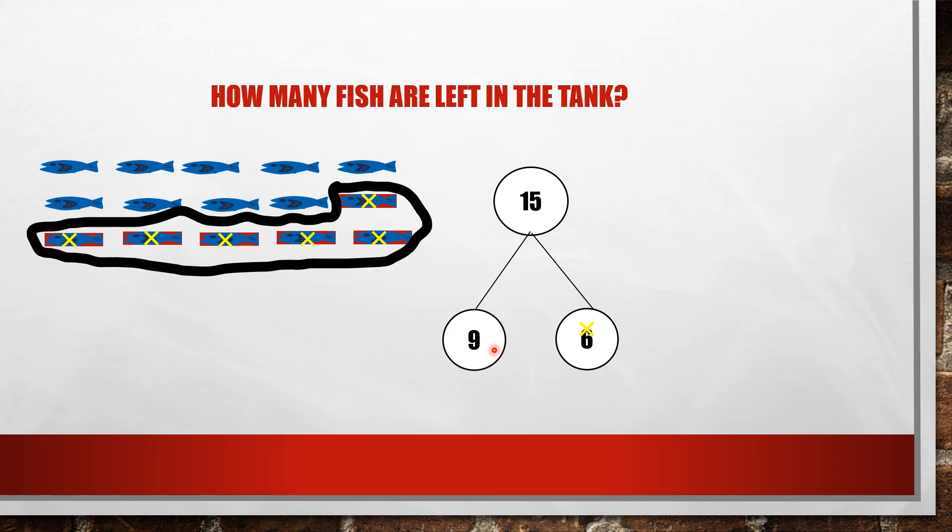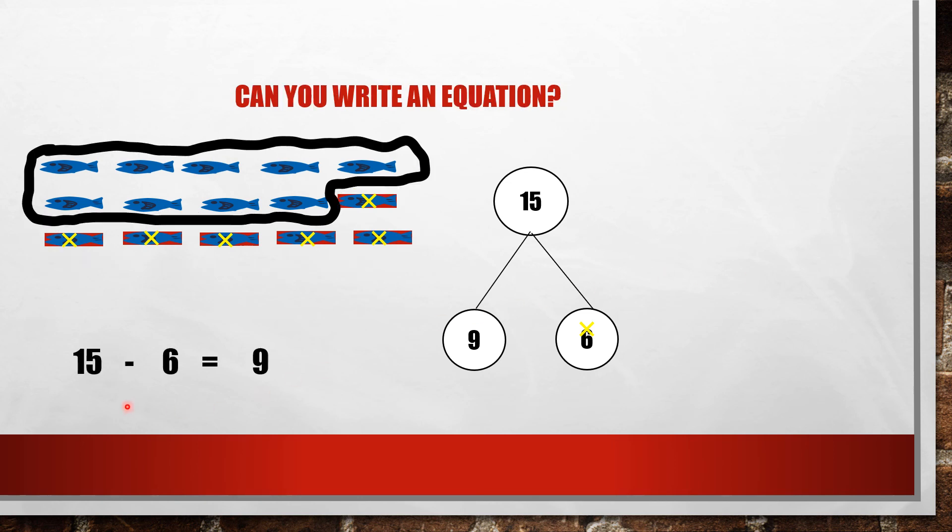Do you think you can do an equation next? Remember, an equation is a number sentence. Our number sentence should match our number bond, kindergarten. Go ahead and try to write a subtraction equation for this number story. Ready? Go. Kindergarten, did you write an equation that matches your number bond? The same numbers that are in your number bond should be in your equation. We started with 15 fish. We took away six fish. After we took away six fish, we counted nine fish that were left. Fifteen, take away six, equals nine.